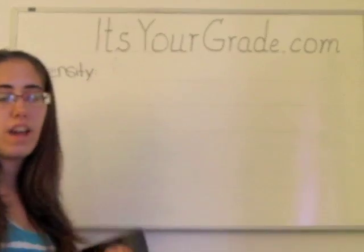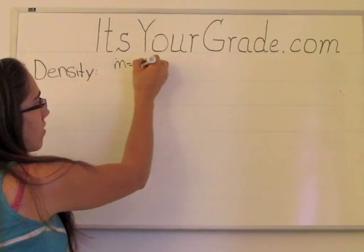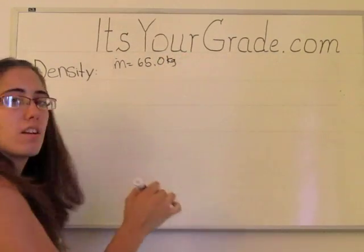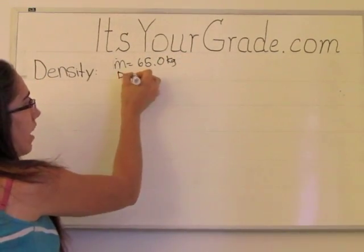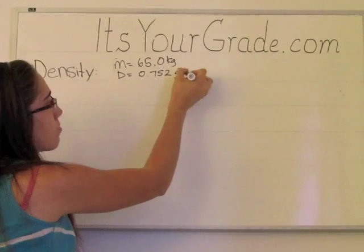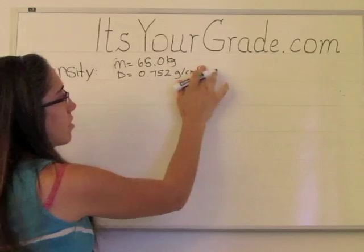We're going to talk about the gas in your gas tank. The gas in your gas tank has a mass of 65.0 kilograms, and the density of gasoline is 0.752 grams per centimeter cubed.